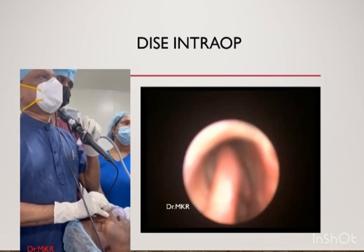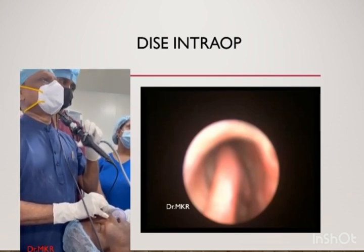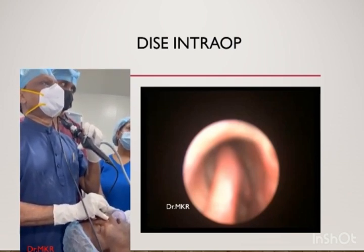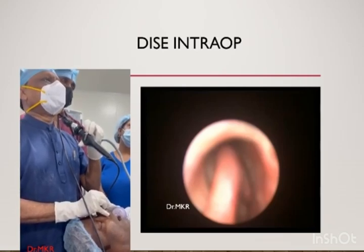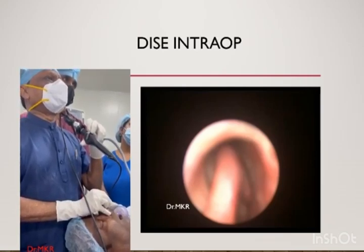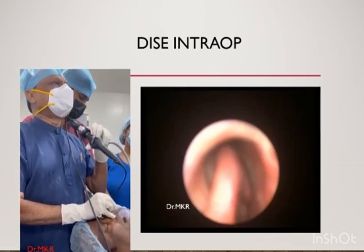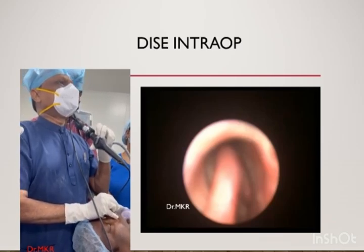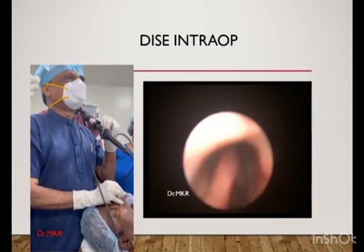The next investigation is DISE, to confirm the location of obstruction — VELUM, Oropharynx, Tongue base, and Epiglottis. You can remember it by the abbreviation. This is a DISE.